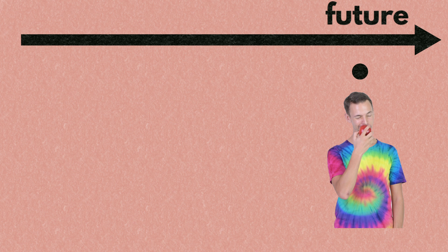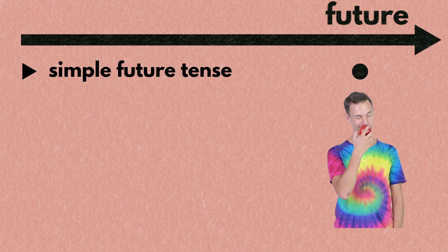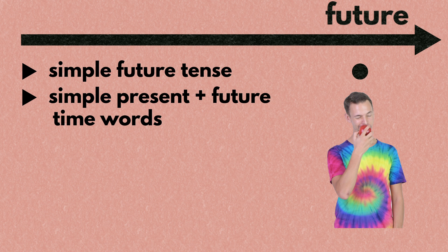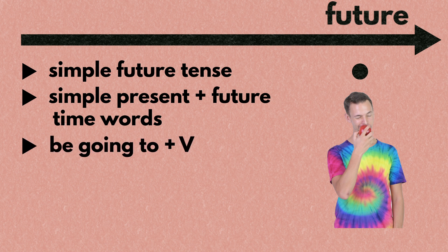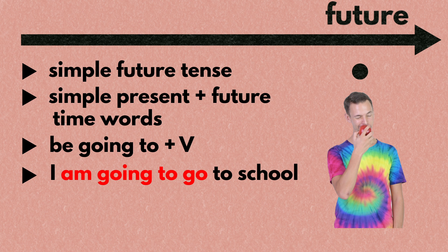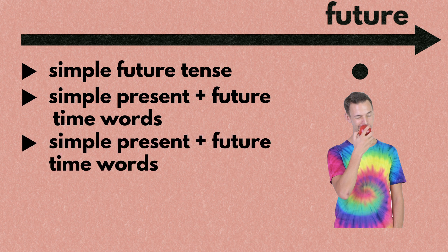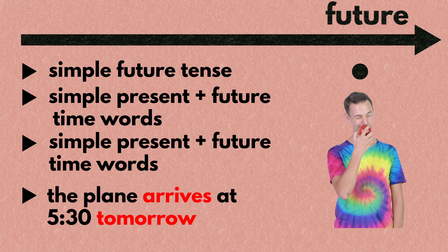Now let's talk about the future category. If something is going to happen in the future and there's nothing special about it, use the simple future tense. There are a number of ways to express it. The first way is to put will with a verb in its base form, as in I will go to school. The second way is to have be going to with a verb in its base form, as in I am going to go to school. The third way is to use the simple present tense with words pointing at a future time, for example the plane arrives at 5:30 tomorrow. Please check out the video on the simple future tense for more ways.